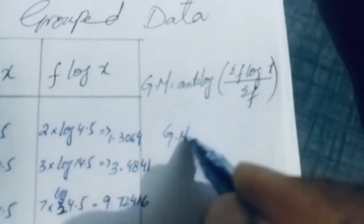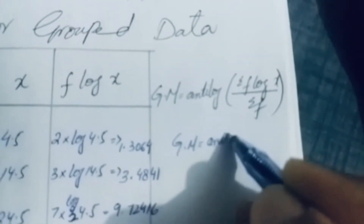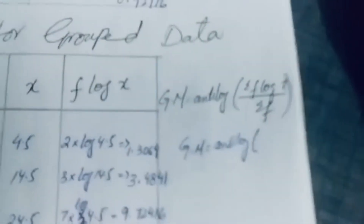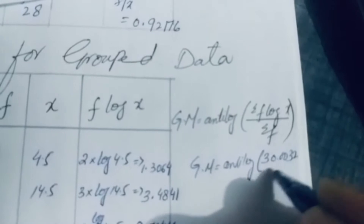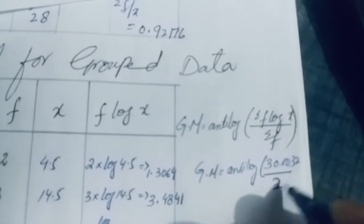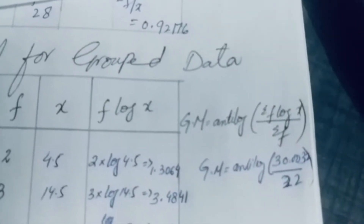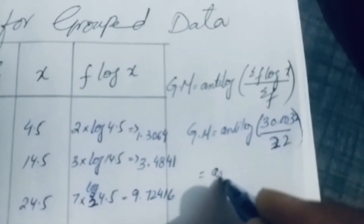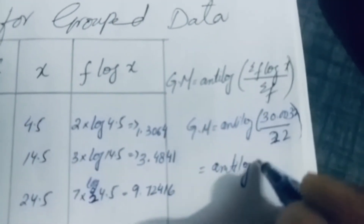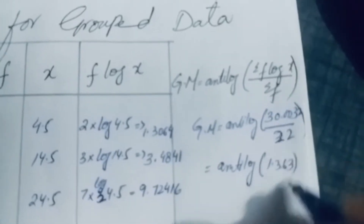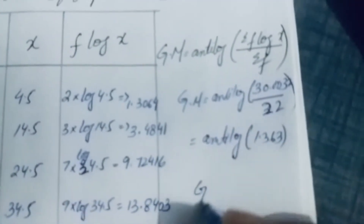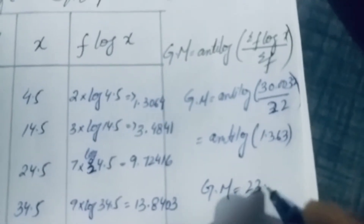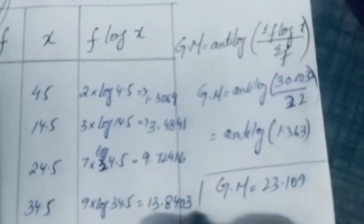Geometric mean equals antilog of 30.0032 divided by 22, which gives antilog of 1.3638. Taking the antilog, geometric mean equals 23.109.